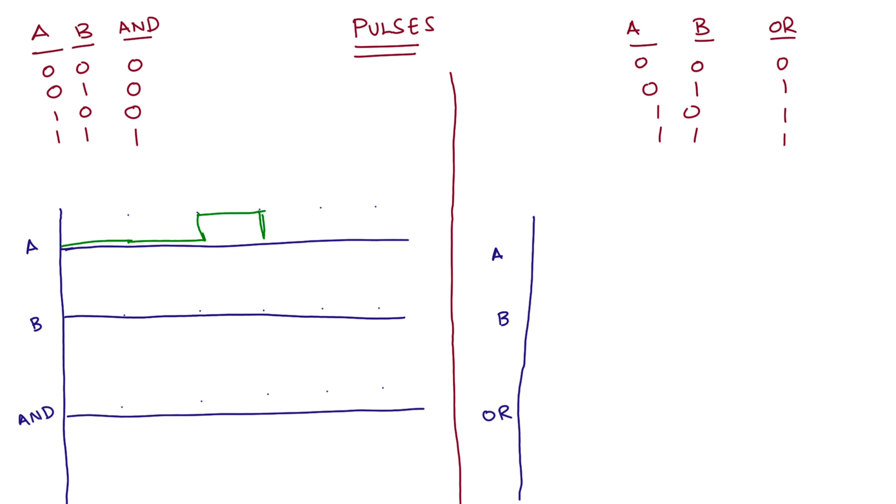Now I'm drawing the signal waveforms exactly as the truth table guides me to. Wherever A is 0, the signal is low. Where A is high, the signal is high, and the same goes with B. Maybe I can draw our table here itself. So an AND signal is high or 1 only when both the signals are high or 1. So as you can see, the AND signal is low even when one of the signals is low. Only when both the signals A and B are high, then the AND signal is also high.